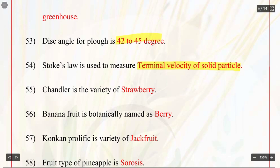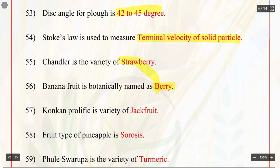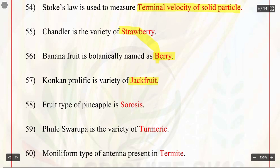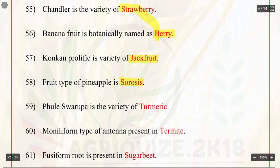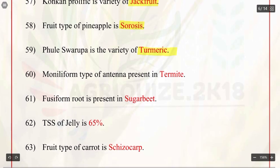Q55. Chandler is the variety of strawberry. Q56. Banana fruit is botanically named as berry. Q57. Konkan Prolific is a variety of jackfruit. Q58. Fruit type of pineapple is sorosis. Q59. Phule Swarup is the variety of turmeric. Q60. Moniliform type of antenna is present in termite.